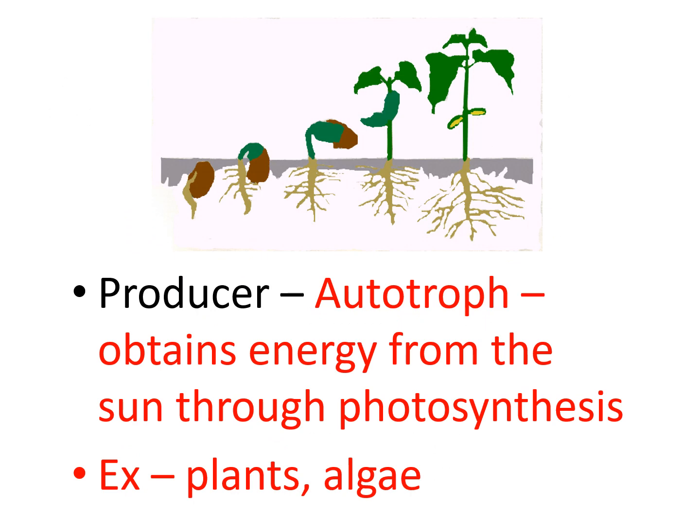A producer is also known as an autotroph. An autotroph is something that automatically gets energy — it's automatically getting energy from the sun. We're talking about plants. Some autotrophs live at the bottom of the ocean where there's no sun and they get energy from hydrothermal vents. But in this case, we're talking about producers — plants obtaining energy from the sun through photosynthesis.